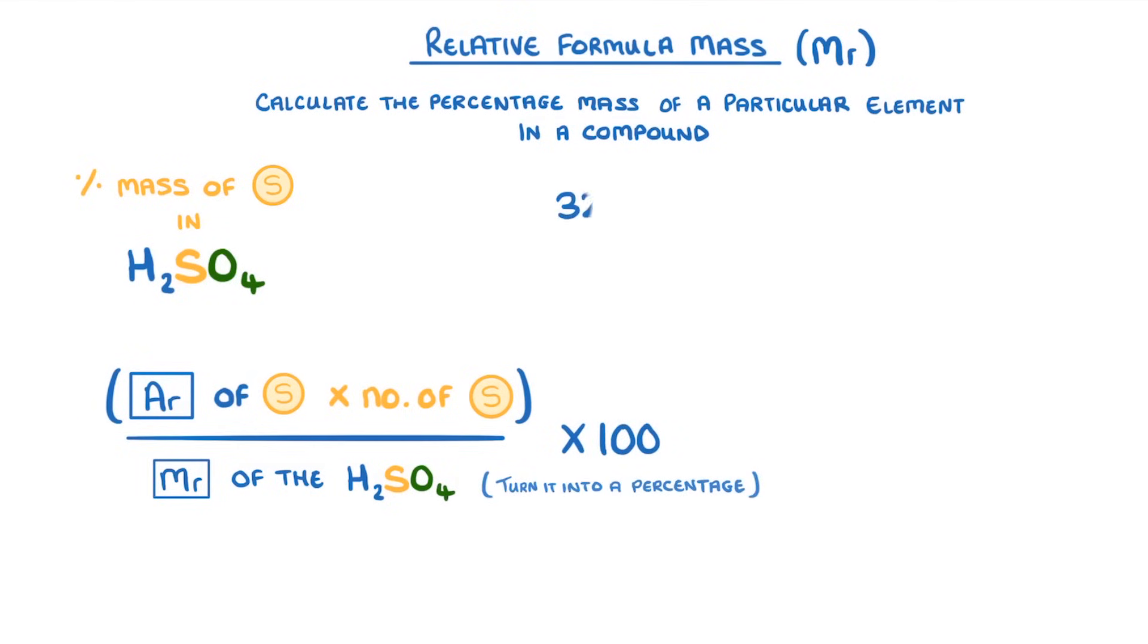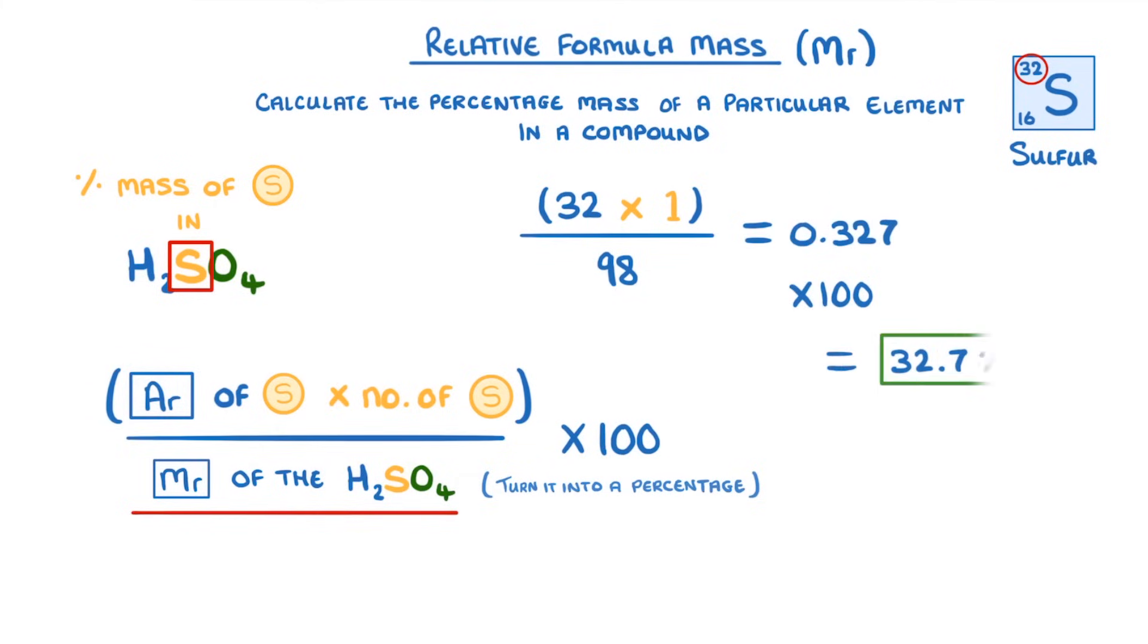So here we would do 32 which is the Ar of sulfur times 1 because there's only one atom of sulfur in sulfuric acid divided by 98 as that was the compound's relative formula mass that we found earlier. This gives us 0.327 which we then times by 100 giving us our answer of 32.7 percent.